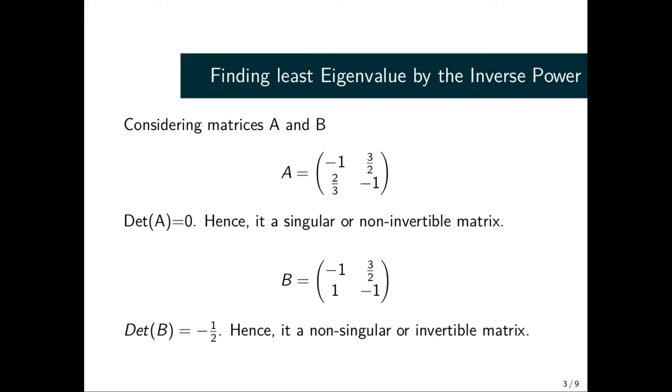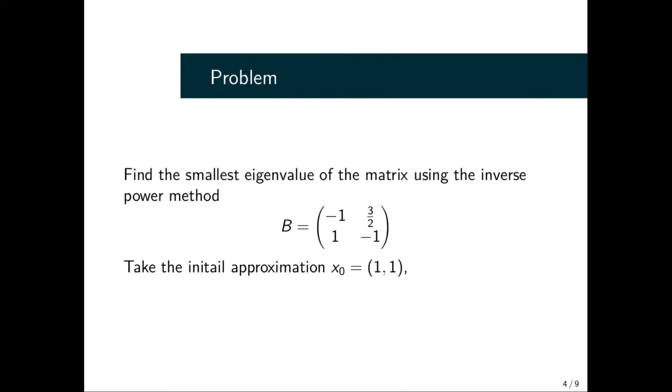...then we can use the singular value decomposition to be able to give us the singular values of the matrix. Considering our second matrix, which is B, the determinant is equal to -1/2. As long as the determinant is not equal to zero, it means that matrix has an inverse, so we can say it is non-singular or invertible matrix.